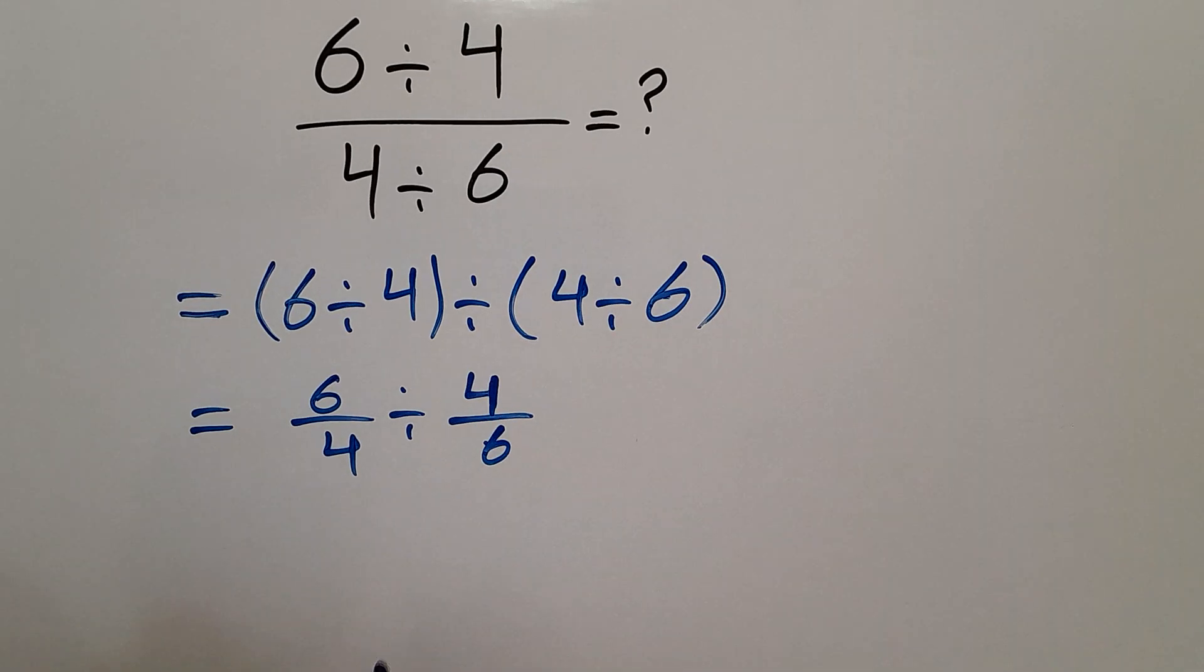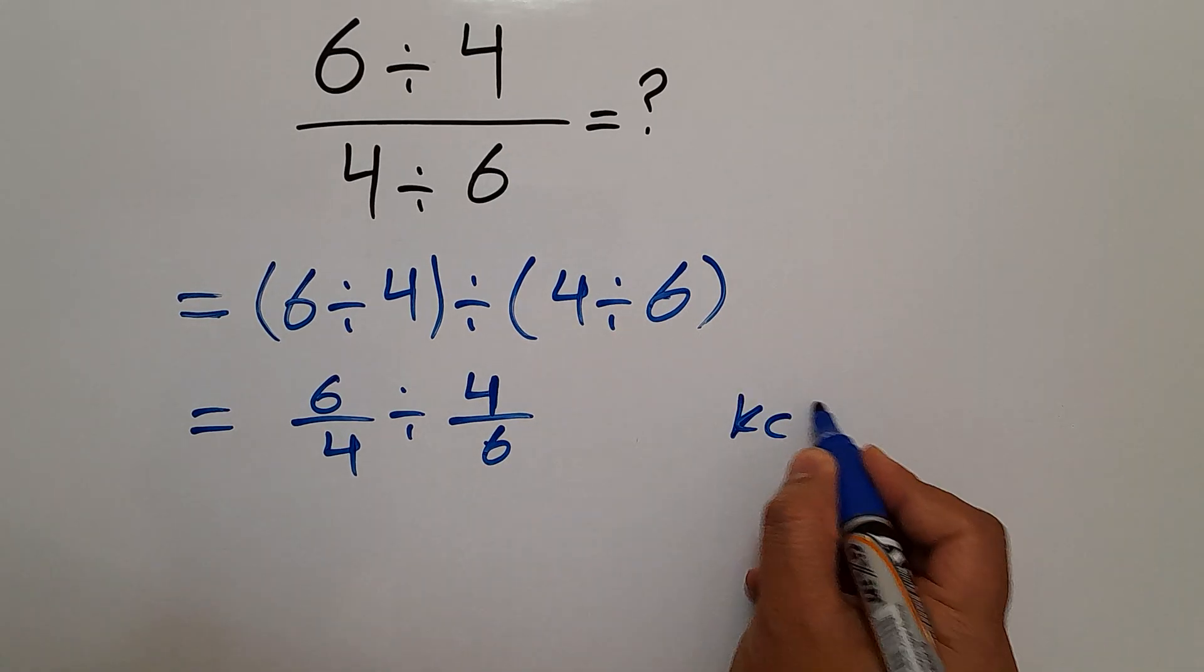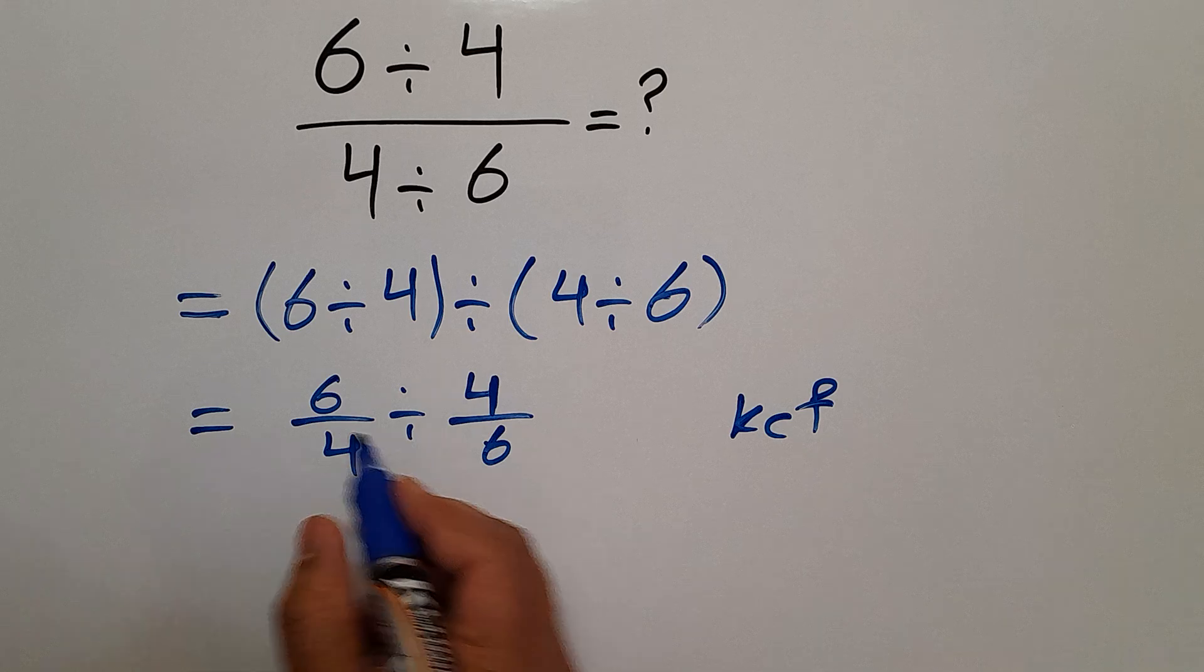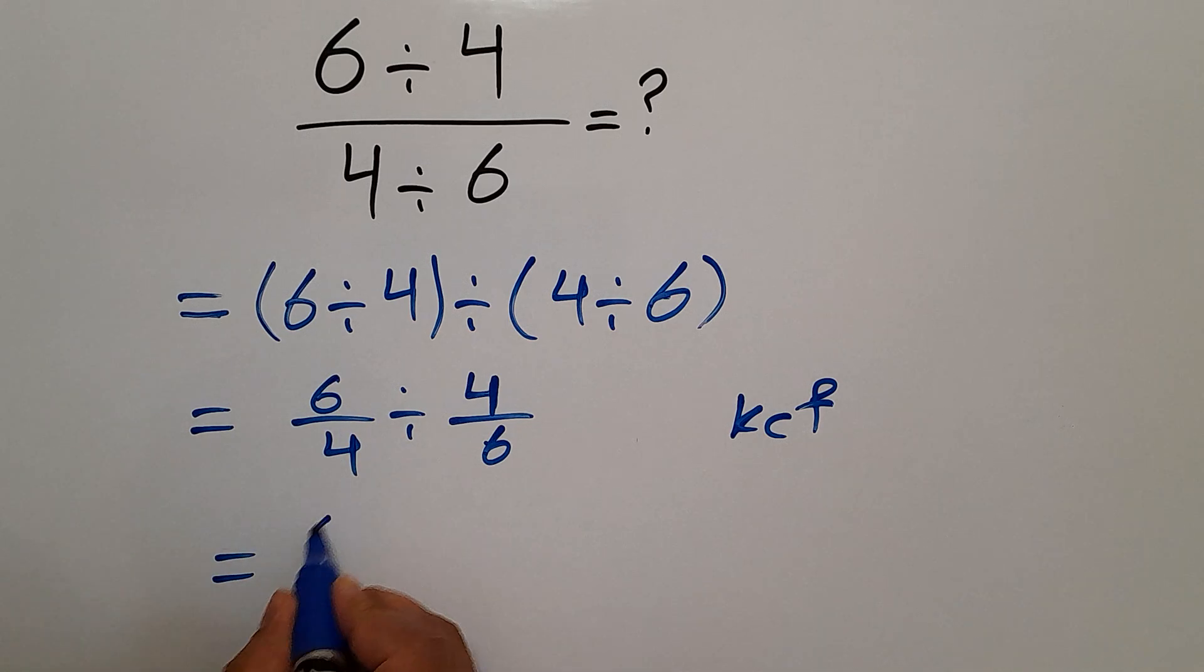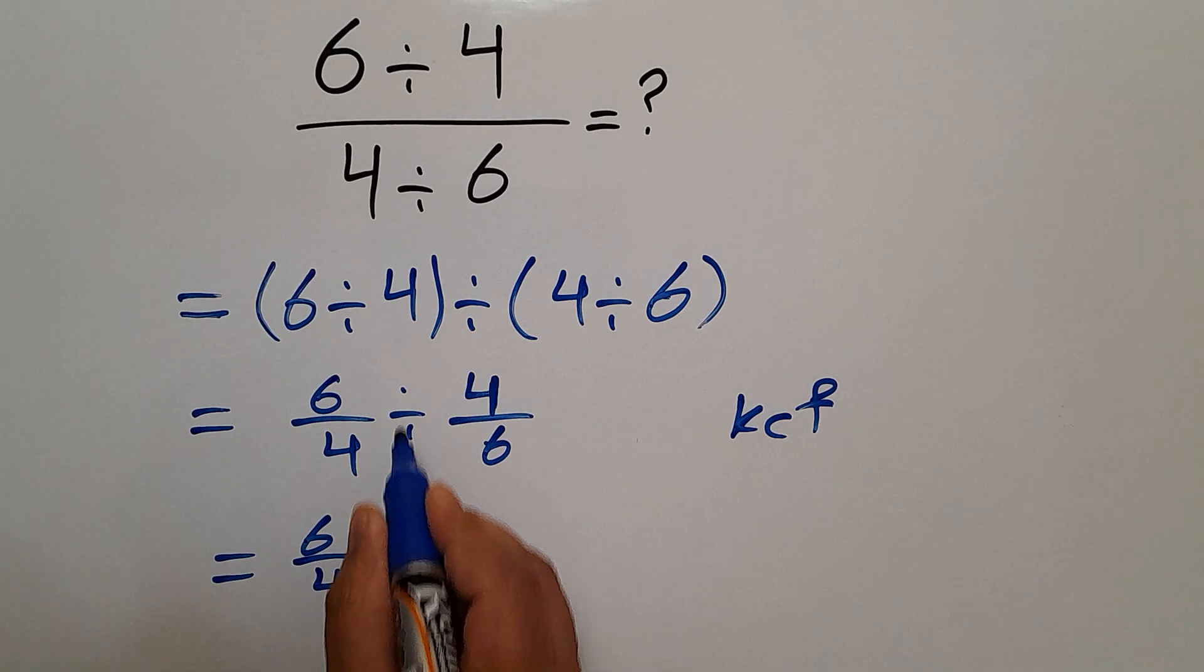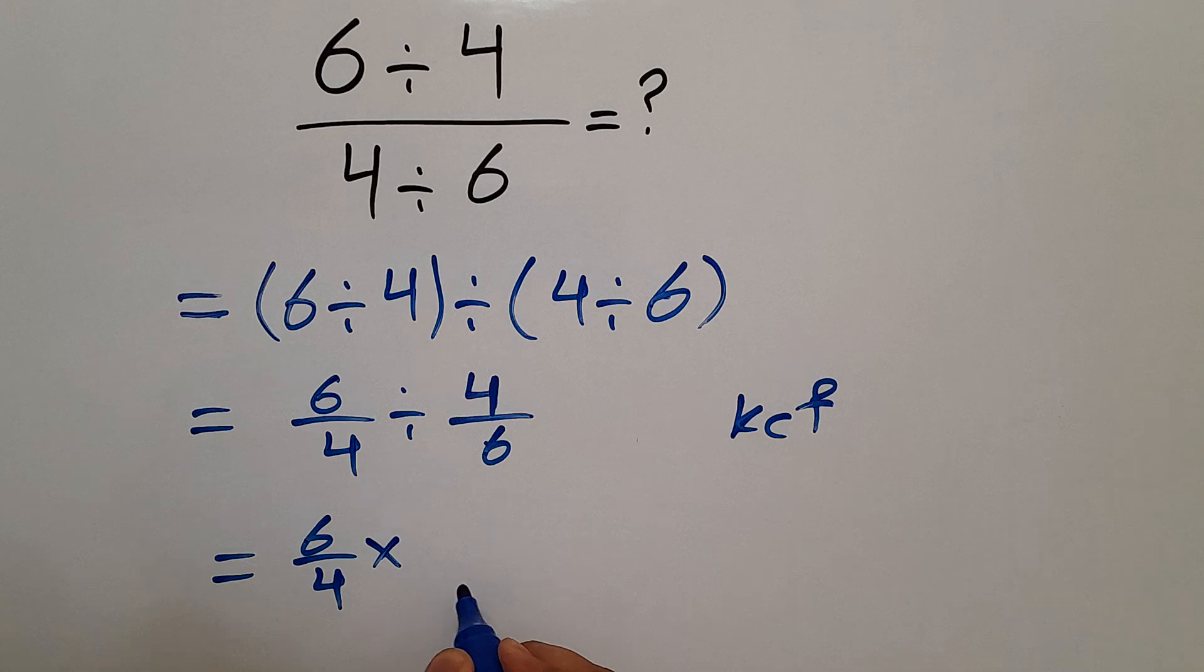And now, according to the KCF rule, keep the first fraction 6 over 4, change division to multiplication and flip the second fraction.